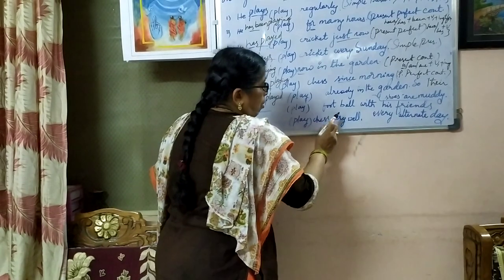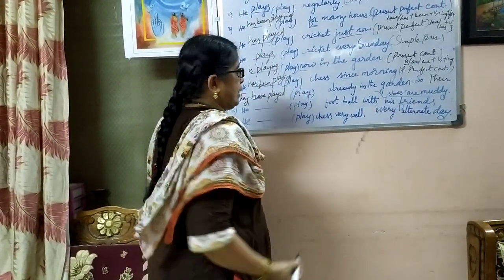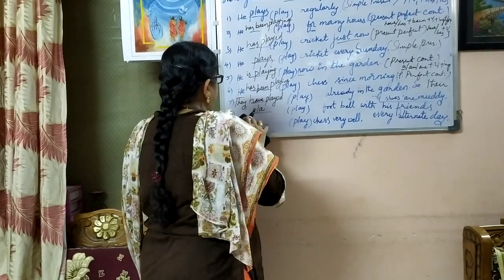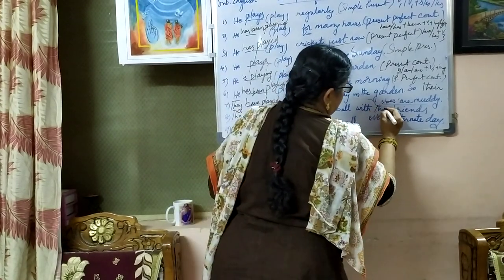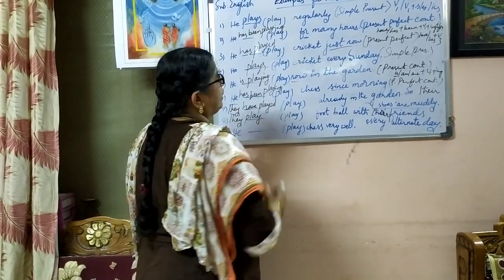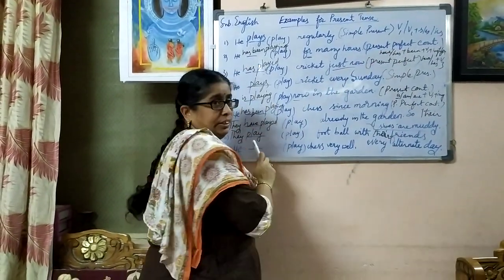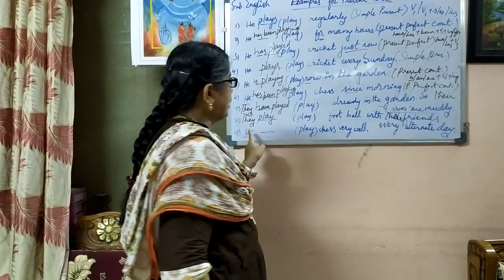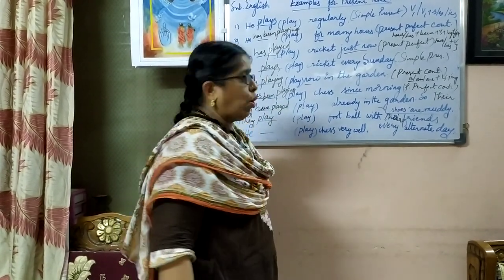Coming to the eighth one: he dash play football with his friends every alternate day. This is also simple present tense. The answer is: he plays football with his friends every alternate day. For example, if we take 'they' in place of 'he', the verb form changes to V1, because the subject is third person plural. They play football with their friends every alternate day.